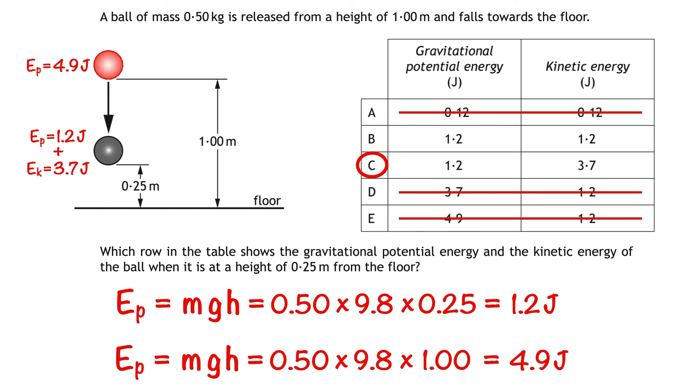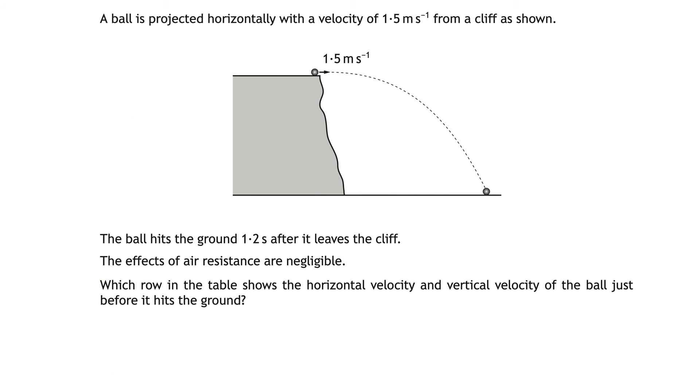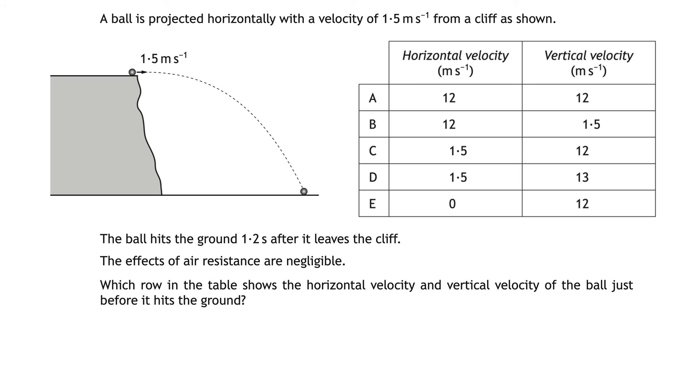Here's another question which shows that we can often narrow down our choices by knowing just a little about the topic. A ball is projected horizontally with a velocity of 1.5 meters per second from a cliff as shown. The ball hits the ground 1.2 seconds after it leaves the cliff. The effects of air resistance are negligible. Which row in the table shows the horizontal velocity and vertical velocity of the ball just before it hits the ground? And here's the table. If you know about projectiles then you'll know that their horizontal velocity is constant. So in this question that means a constant horizontal velocity of 1.5 meters per second throughout the ball's flight. Already we can rule out three of the options.